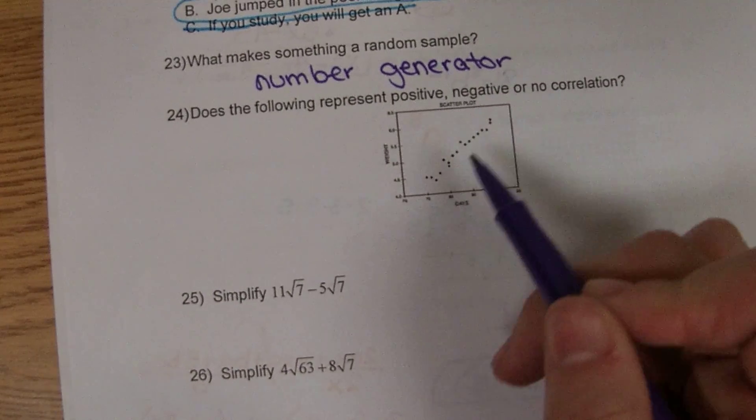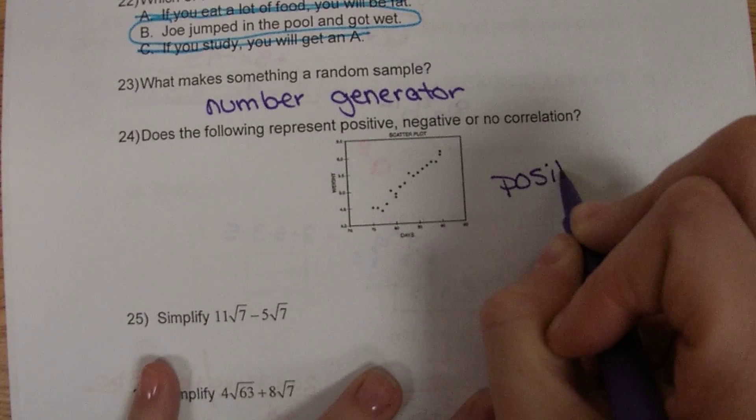24 is going uphill, so that would be a positive correlation.